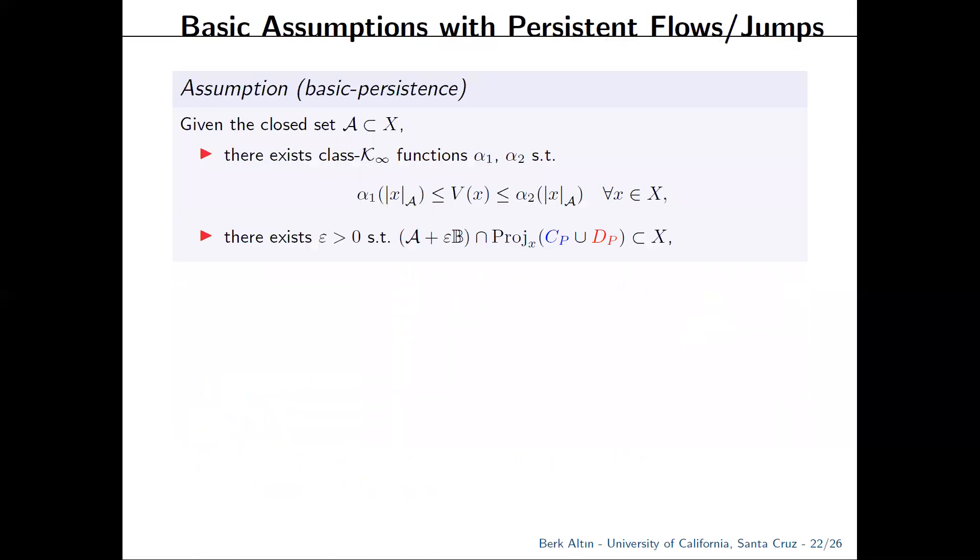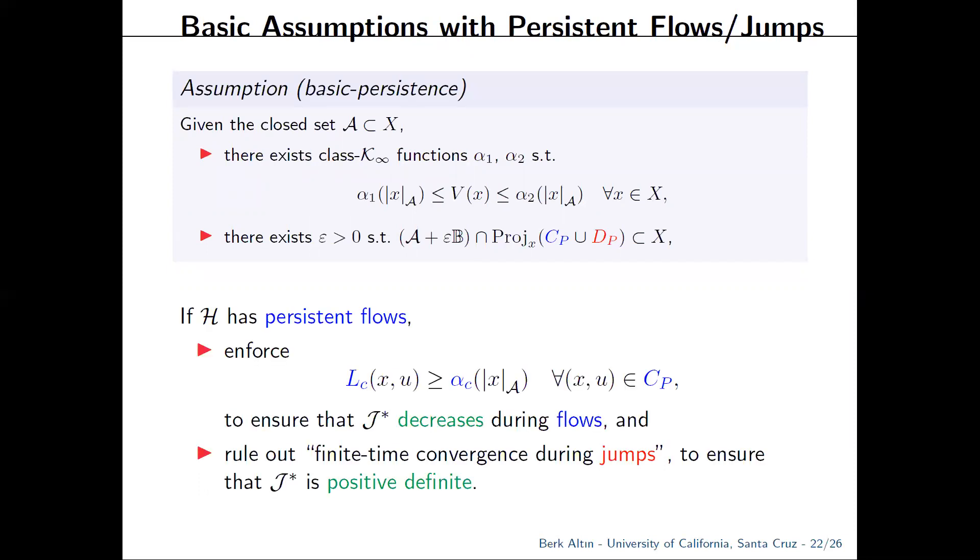To formalize things, we will keep two of our basic assumptions from before. For persistent flows, we will also insist that the flow cost is positive definite. The price to pay is that we need to rule out finite time convergence via jumps. Otherwise, if we can jump from outside of A to A and the jump cost is zero, we have effectively destroyed positive definiteness of the value function. And the same story for persistent jumps.